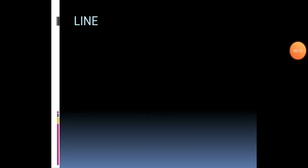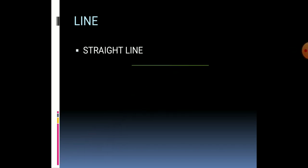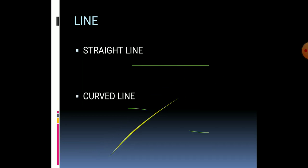Let's start with some basic concepts that we have learnt in our previous classes. How many types of line are there? Generally, there are two types of line. One is straight line, another is curved line. A straight line joins two points. A curved line also joins two points but in a curved manner.